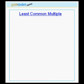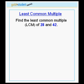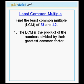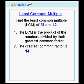Now let's do an example. Let's find the least common multiple, or LCM, of the numbers 28 and 42. Remember, the LCM is the product of the numbers divided by their greatest common factor. Here, the greatest common factor of 28 and 42 is 14.